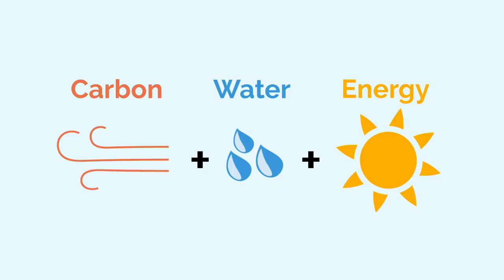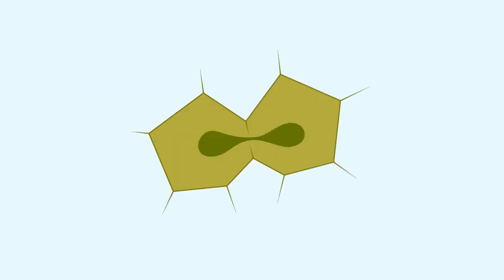So the carbon from the air, along with water and energy from the sun, help to make these structures. As cells grow, they divide and make new cells.